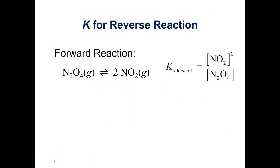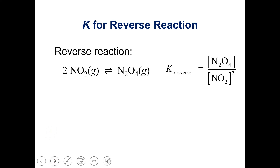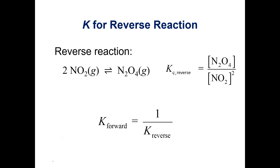What if you have K for the forward reaction but need K for the reverse reaction? We can obtain it by simply taking the reciprocal. So K for the reverse reaction equals 1 over K for the forward reaction. If you're flipping a reaction, to get the equilibrium constant for the reverse reaction, you take the reciprocal.